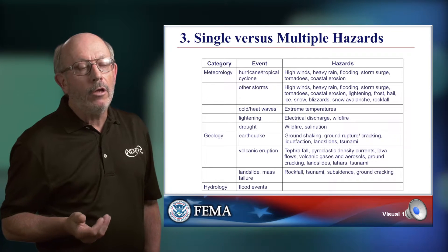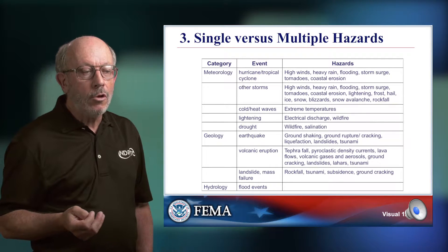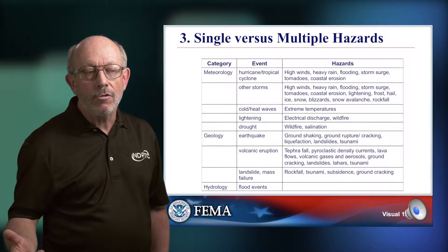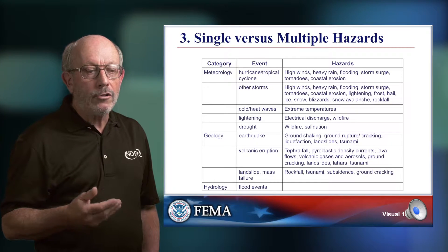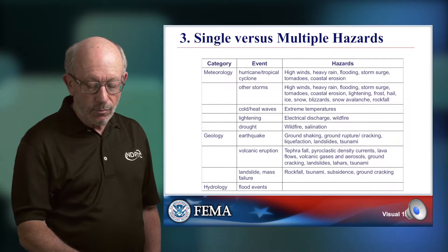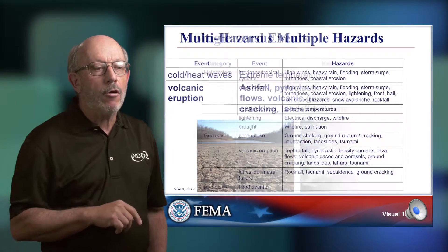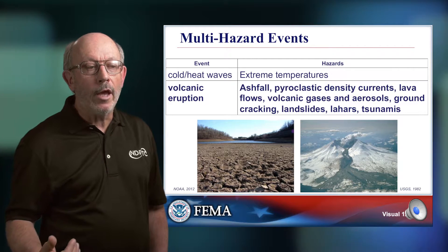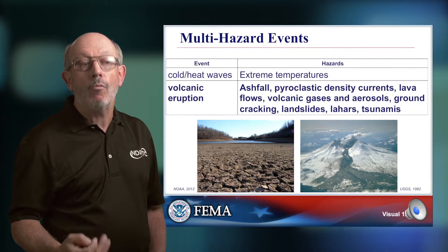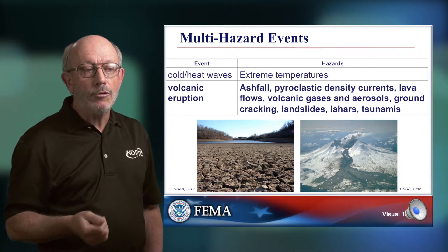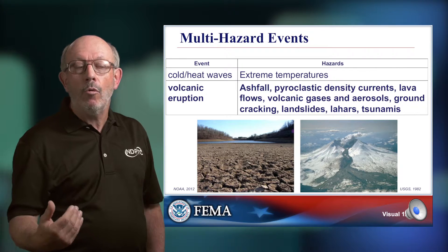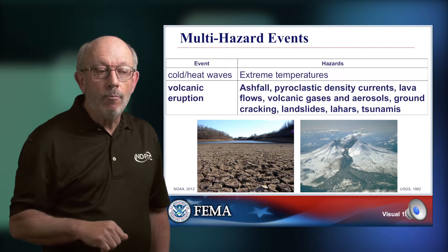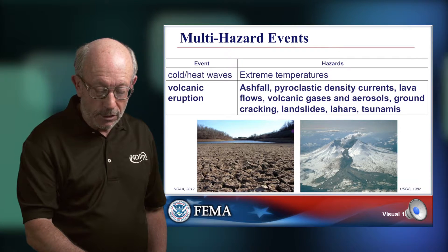Our third category of distinction is that some hazard events have just a single hazard associated with them, while others have many. Let's zero in on two and contrast them. Extreme temperature — heat waves, cold waves — really has only one problem associated with it: the temperature itself. A volcanic eruption, on the other hand, can have seven, eight, or nine different problems occurring at the same time but in different places. We'll return to this key difficulty in module 13.